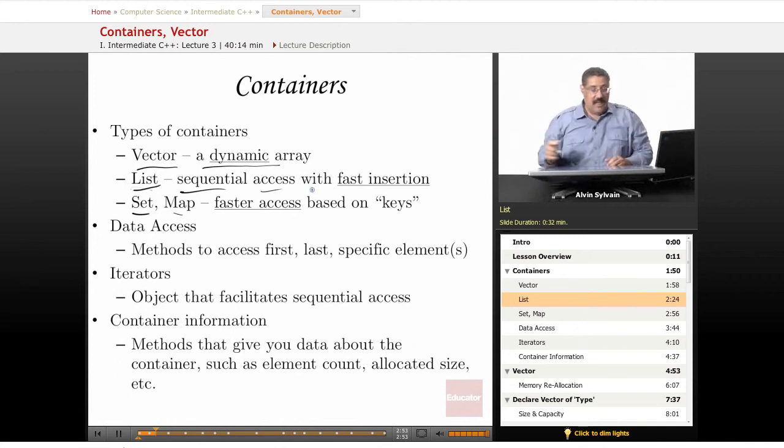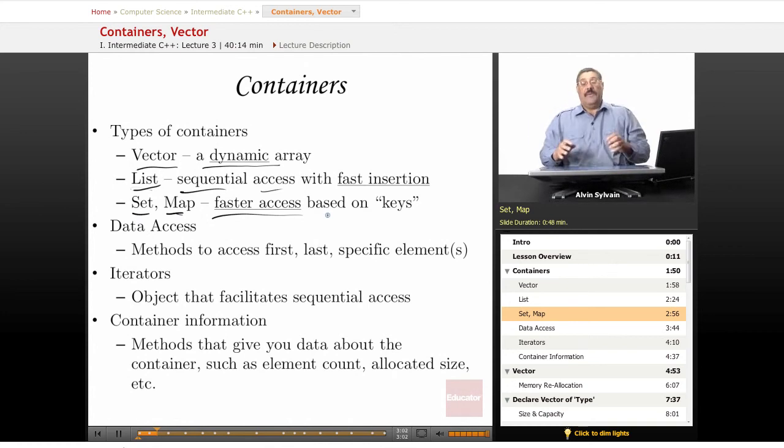With a set and a map, you have faster access. You can have a key - it's like looking up something in a dictionary. You want to look up the word 'boat,' well you move to the B section, then from the B section you move to the O section: B-O, then B-O-A-T, and then you can find it quickly.